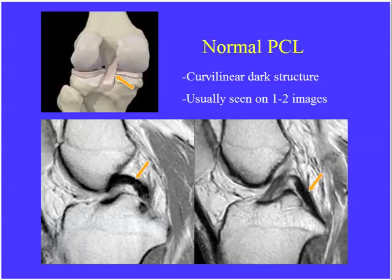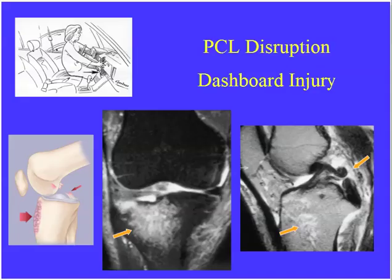Briefly on the PCL: it arises along the medial femoral condyle in the inner notch and inserts on the posterior slanted portion of the tibia — best seen on sagittal plane. The dashboard mechanism of injury is associated with PCL disruption. In the flexed knee, the tibia is driven posteriorly, giving a bone contusion along the anterior tibia. When you see this bone contusion pattern, think posterior cruciate ligament disruption. This can occur in an MVA or if someone falls on a flexed knee — commonly seen in football players at the bottom of a pile.